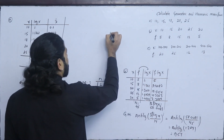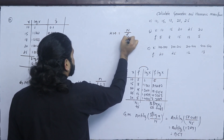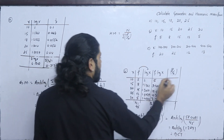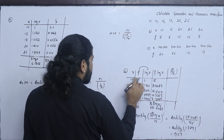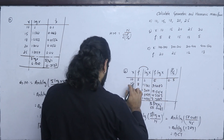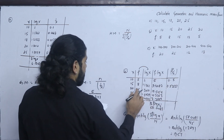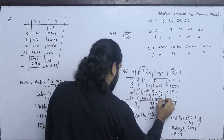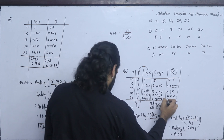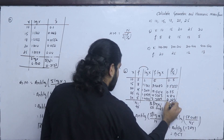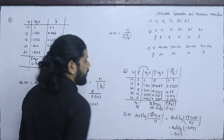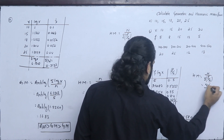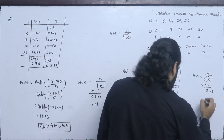Now for the harmonic mean of the discrete series, the formula is N upon summation(f/x). We calculate f/x: 5/10 = 0.5, 8/15 = 0.5333, 15/20 = 0.75, 25/25 = 1.00 — wait, 12/25 = 0.84, and 5/30 = 0.1667. Summation of f/x = 2.43. Harmonic mean = 45 upon 2.43 = 18.52.